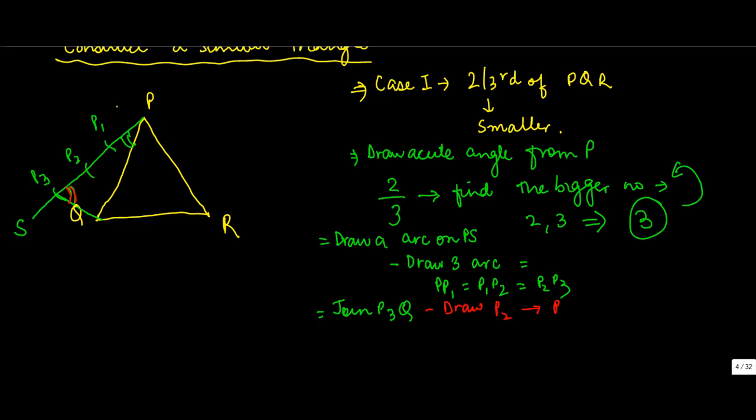Measure this angle and draw from P2 on PQ in such a manner so that the measure of this angle and this angle is equal. Once you reach this point, let's call it M. Draw a parallel line to QR from M on PR.